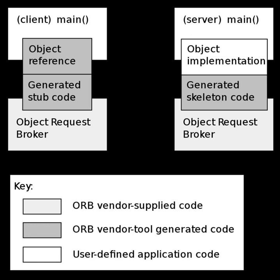Generated code translates the high-level interface definition into an OS and language-specific class base for use by the user application. This step is necessary in order to enforce CORBA semantics and provide a clean user process for interfacing with the CORBA infrastructure. Some IDL mappings are more difficult to use than others. Due to the nature of Java, the IDL-Java mapping is rather straightforward. This is also true of the IDL-to-Python mapping. The C++ mapping requires the programmer to learn data types that predate the C++ Standard Template Library, while the C++11 mapping requires heavy use of the STL.